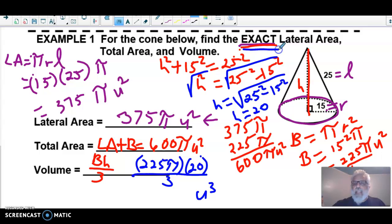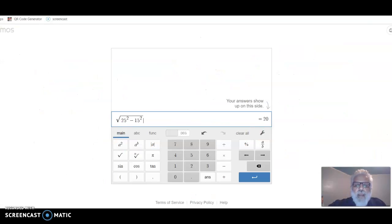Since I'm exact, that π is going to be part of my answer because I got the exact, which means I just got to worry about the 225, the 20, and the 3. And that's what I'm going to put into my calculator. So I'm going to have my 225 times my 20 and I'll divide that by 3.